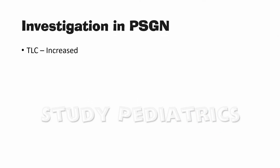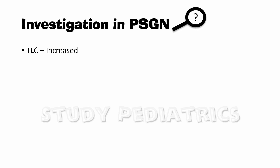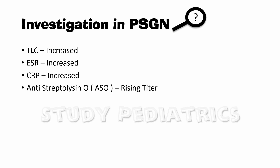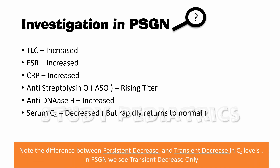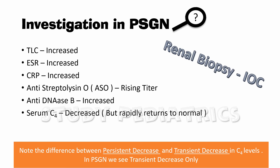Investigations in PSGN include TLC, ESR, and CRP, which are all increased. ASO (antistreptolysin O) test shows a rising titer, anti-DNase B is also increased, and serum C4 levels are decreased initially but rapidly return to normal. Notably, PSGN has only a transient decrease in serum C4, whereas conditions like SLE show a persistent decrease in C4 levels. The gold standard investigation remains biopsy.